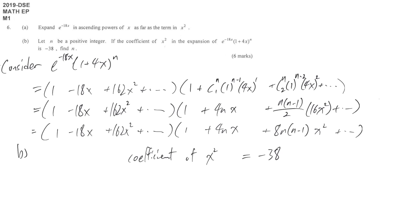x squared. In order to get x squared from the first term in the first bracket, 1, need to multiply something x squared. So need to multiply this term in order to create x squared. Similar reason, negative 18x from the first bracket need to multiply positive 4nx in order to get x squared. 162x squared need to multiply constant in order to keep the power of x become 2. And all the terms behind x^3 times anything will become x^3 or even higher power, so we just negate it.